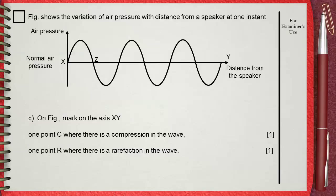Question C. On figure, mark on the axis XY one point C where there is a compression in the wave, and one point R where there is a rarefaction in the wave.